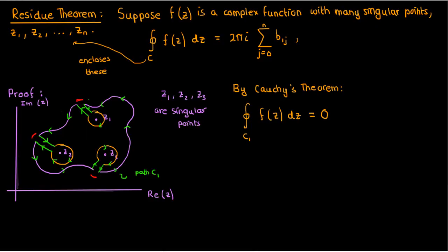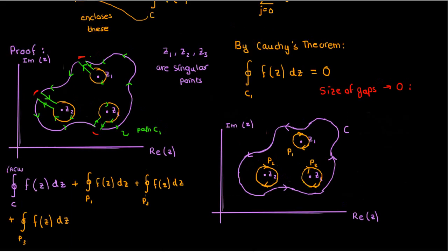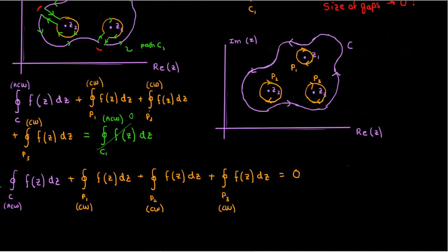If I made the size of these gaps approach zero, then I would find that the anti-clockwise integral around this purple curve c plus the clockwise integrals around each of these circles p1, p2, and p3 equals the anti-clockwise integral along the entire curve c1. It's very similar to what we did last time. Since we know that the latter is zero, we're just left with this expression.